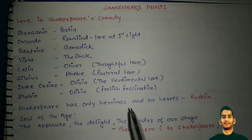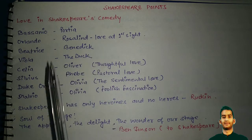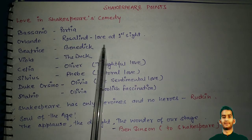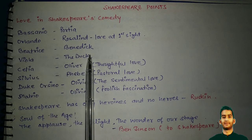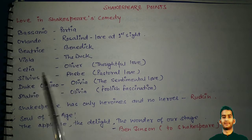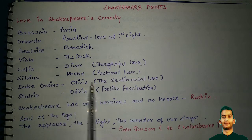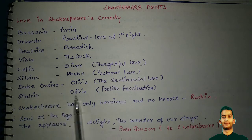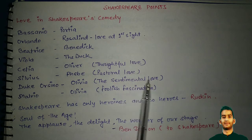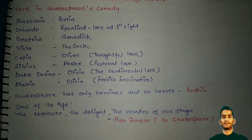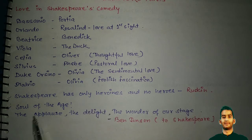Here are some short notes on love in Shakespeare's comedies. Bassanio and Portia represent love at first sight. Beatrice and Benedick, Viola and the Duke, Celia and Oliver represent different kinds of love. Silvius and Phoebe represent pastoral love. Duke Orsino to Olivia represents sentimental love, and Malvolio to Olivia represents foolish fascination. Shakespeare has only heroines and no heroes — this quotation is by Ruskin, which is asked in several exams.